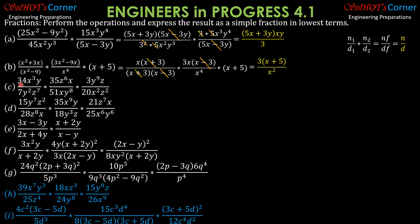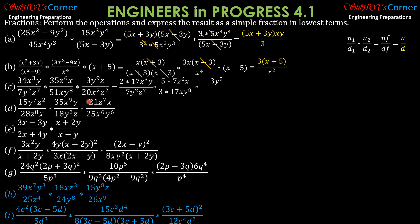For this part: 34 is 2 times 17; x³y divided by 7, y² z to the 7th. 35 is 5 times 7; z to the 6th times x over 3 times 17, x, y to the 8th. Then times 3y to the 9th · z over 2² times 5, x², z².